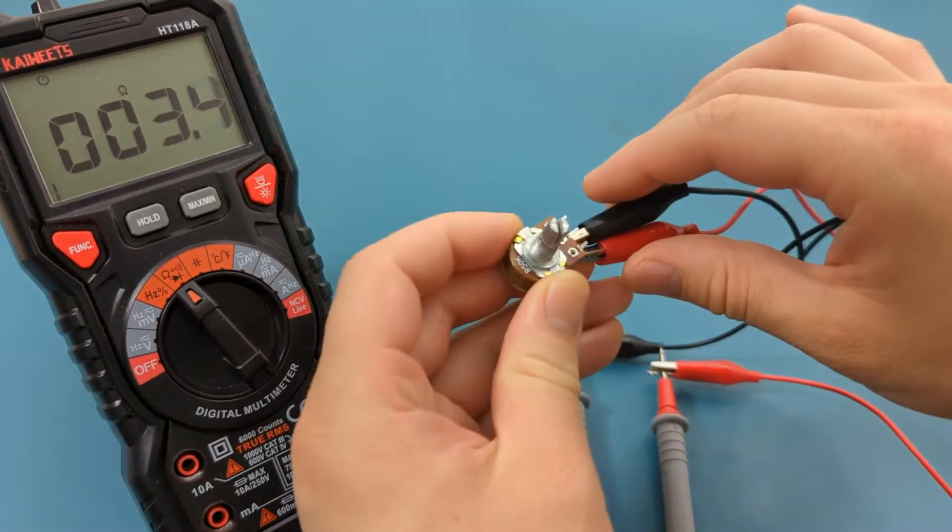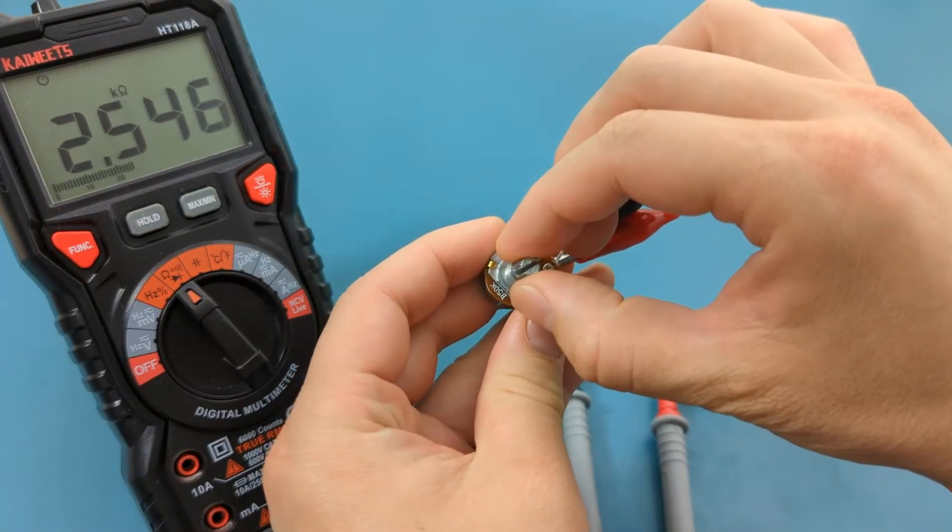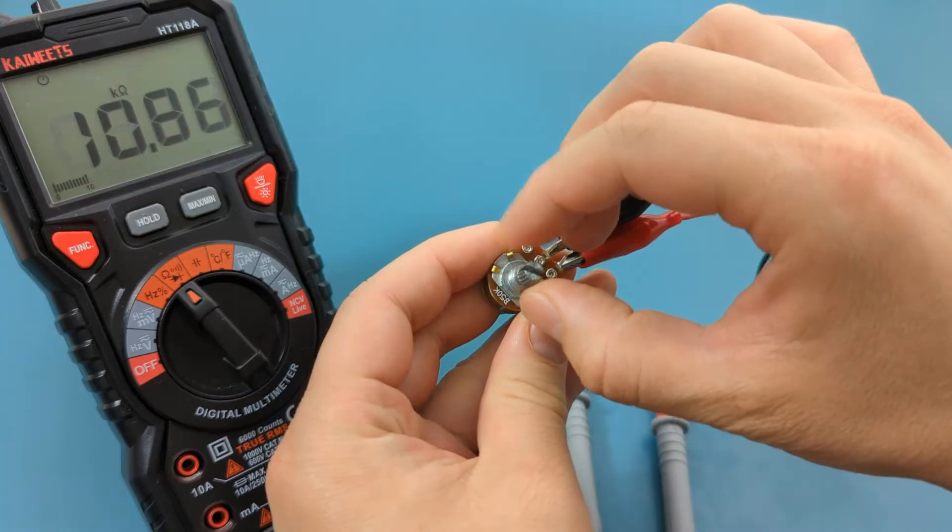As you can see, we have a reading of 3.5 ohms. The value increases smoothly as we turn the dial, which is a good sign.